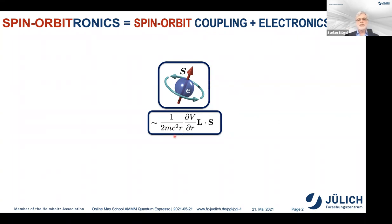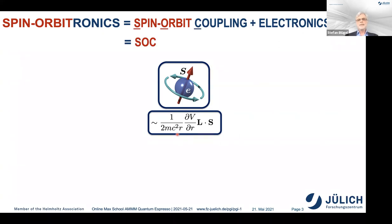You may remember this form of the spin-orbit interaction: the coupling of the orbital moment to the spin moment, written in the radial symmetric form. You see the velocity of light here — obviously it is a relativistic effect, and this tells you already that it is probably a very small effect. In the literature, spin-orbit coupling is simply abbreviated as SOC. When you hear SOC, it means spin-orbit coupling.